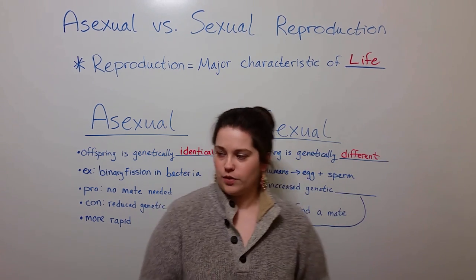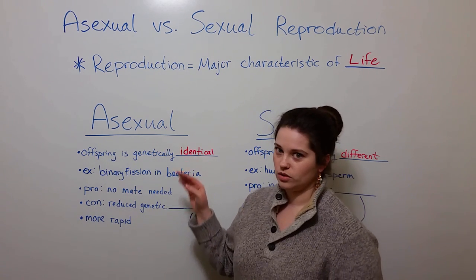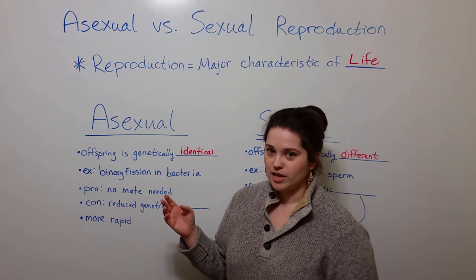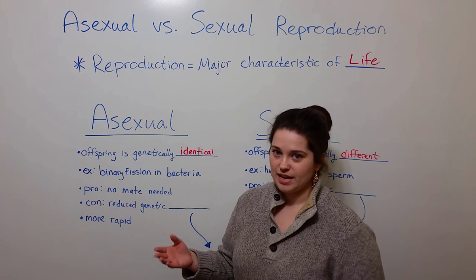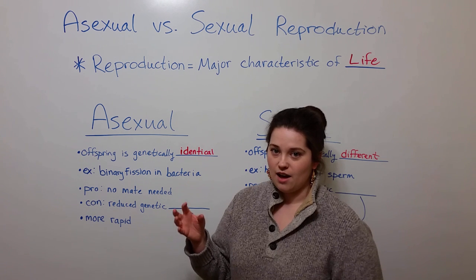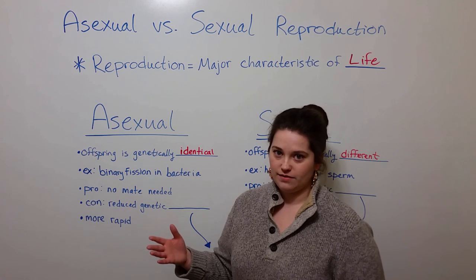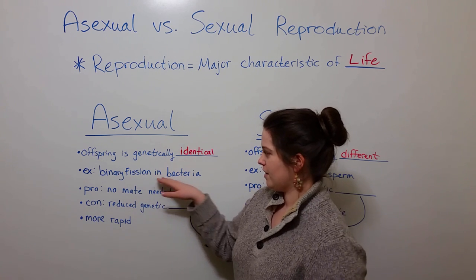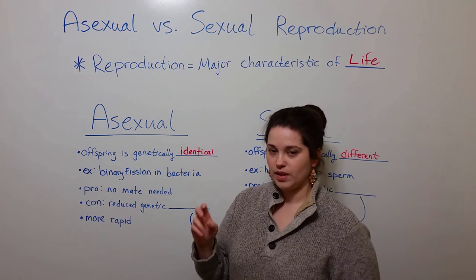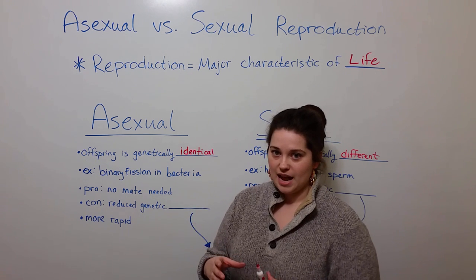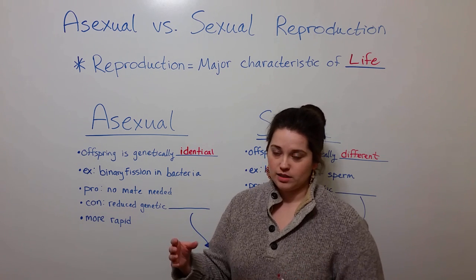The reason that offspring are genetically identical in asexual reproduction is because of how the reproduction proceeds. That is, the DNA of a cell is replicated, and then the cells divide. For example, binary fission in bacteria is where you have a bacterial parent cell that replicates its DNA, enlarges in size, and then splits into two cells.